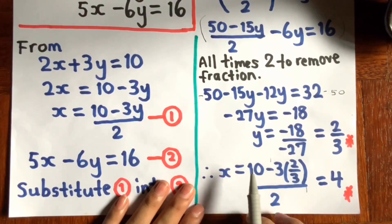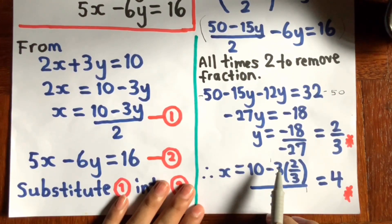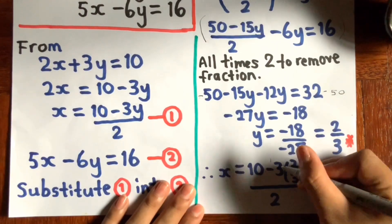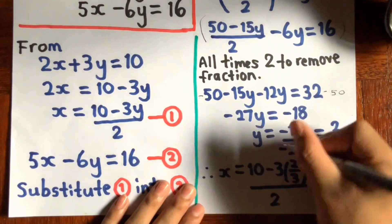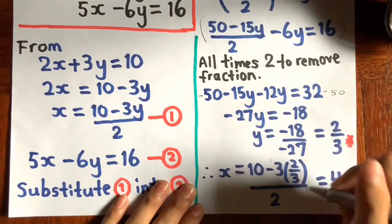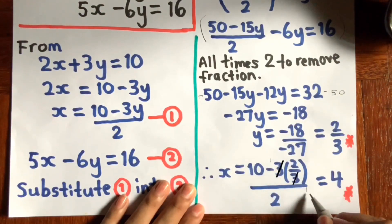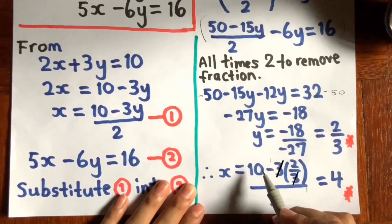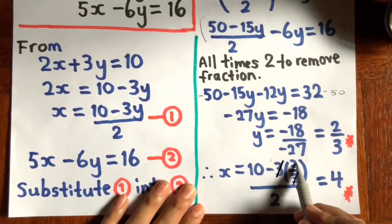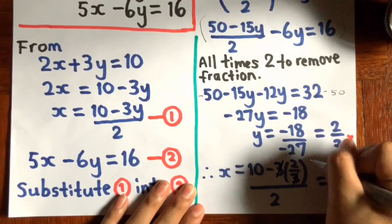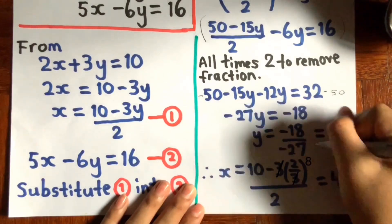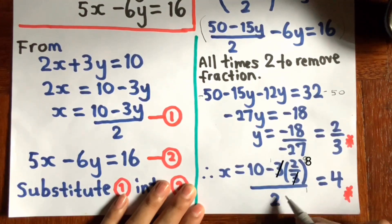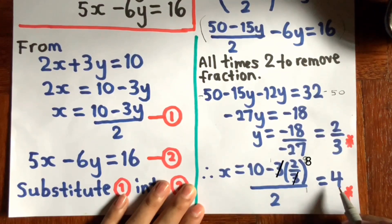So for x, you substitute y equals 2 over 3 back into x equals (10 minus 3 bracket 2 over 3) divided by 2. You can cancel the 3s, giving 10 minus 2 equals 8. Then divided by 2, you get x equals 4.